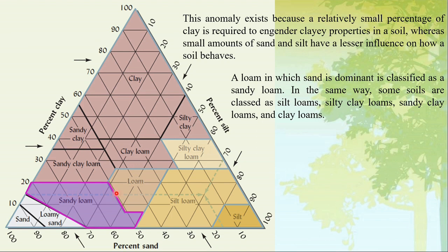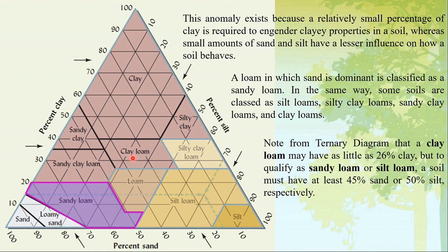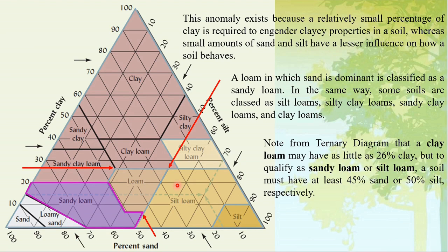You can see on the ternary diagram: this is silt loam, this is silty clay loam, this is sandy clay loam, and this is clay loam. A clay loam has as little as 26% clay, so its clay properties are less pronounced. In a sandy loam, the sand portion is around 45%, and in a silt loam, at least 50% silt is present. This illustrates that even small percentages of clay have a significant influence on soil behavior.